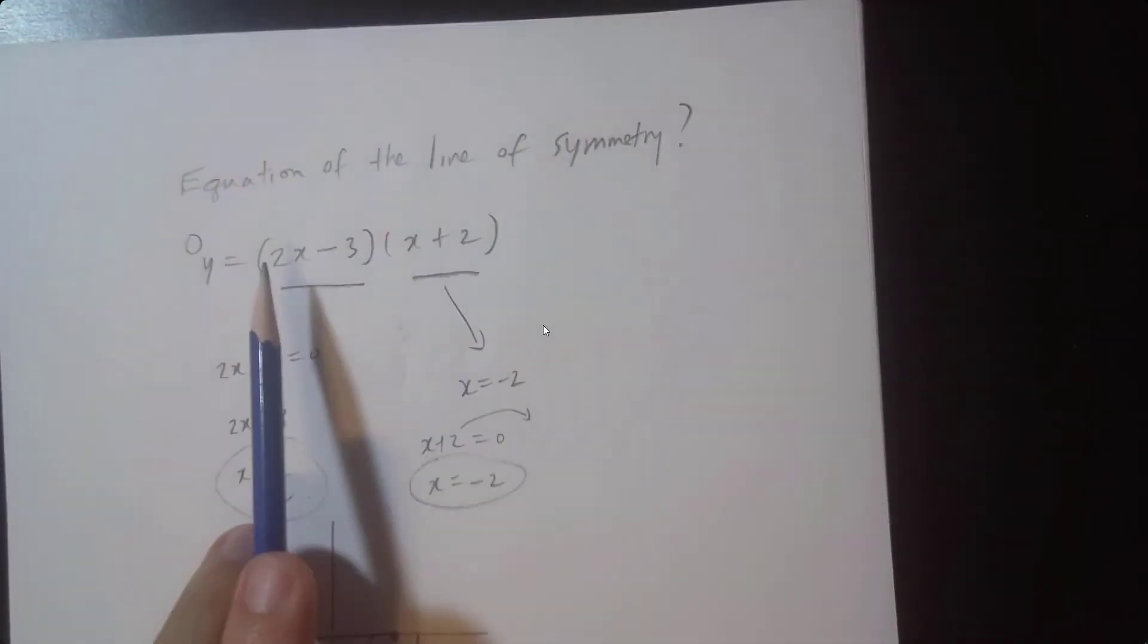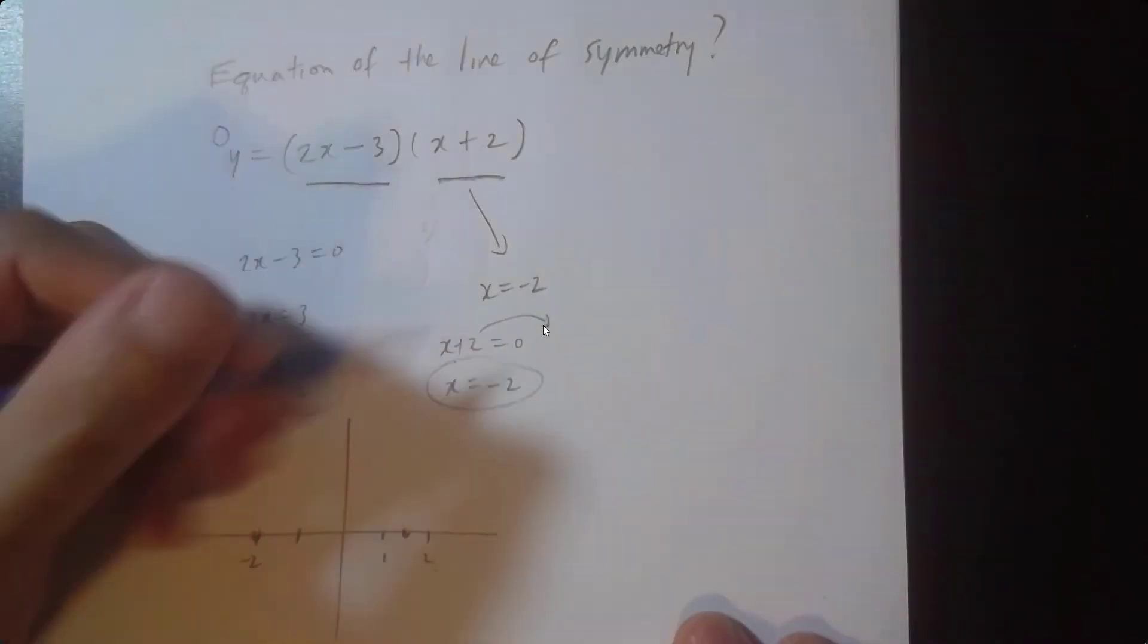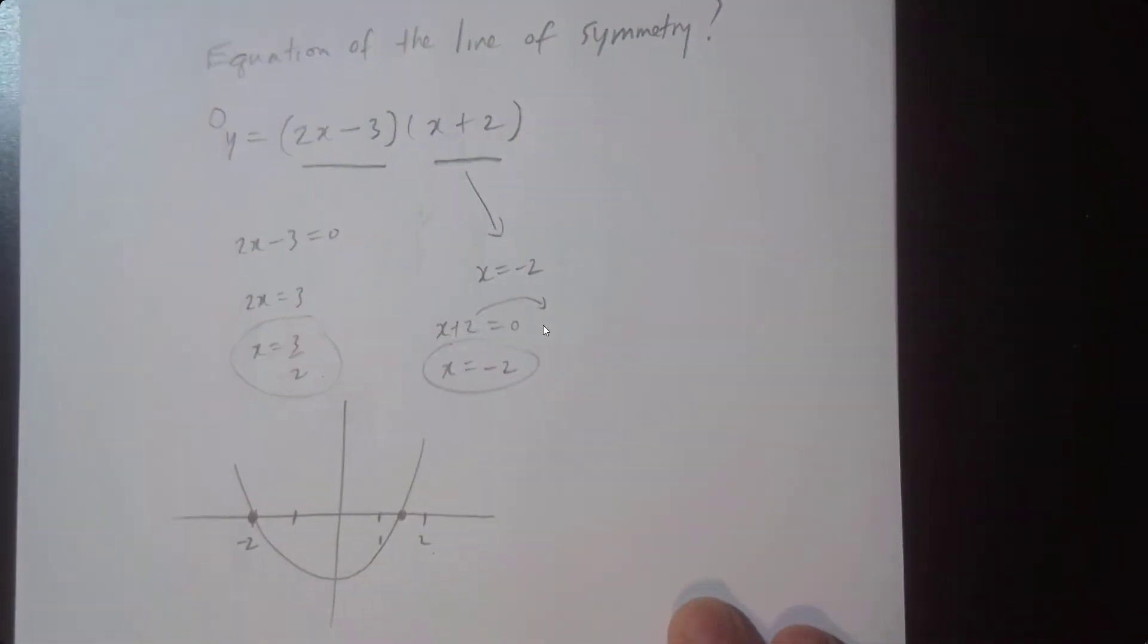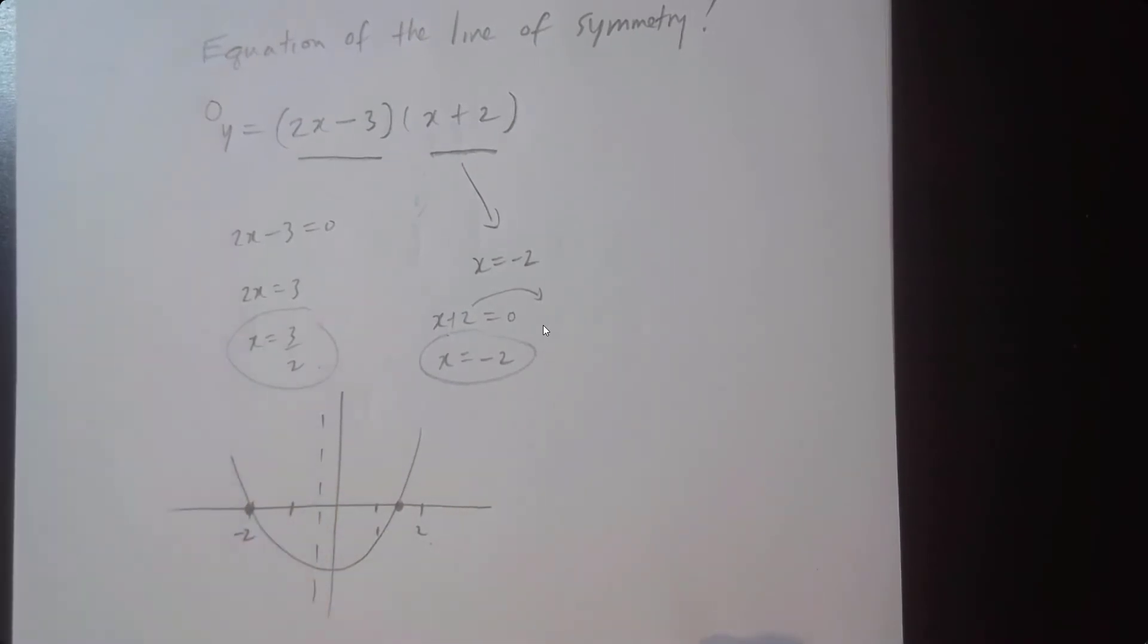And if you multiply 2x times x, it's going to be 2x squared, not negative 2x squared. The fact that it's positive means it's a happy face. Okay, this is kind of tricky. What is the actual center line? We're not exactly sure where it is.